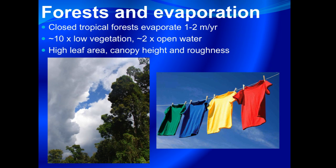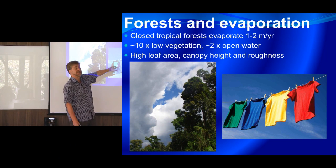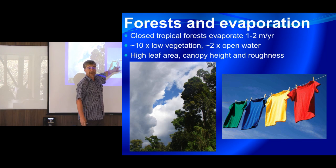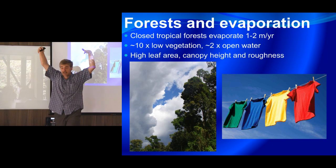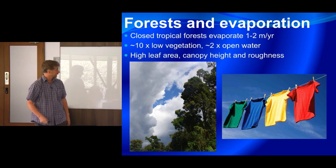Why is that? If you really look at a tree, it's kind of a machine for evaporating water. It has a high leaf area with all these leaves hanging out on the ends of the branches, and tall trunks sticking up to carry them into the air. It's the same idea as why you hang your clothes on a clothesline to dry rather than putting them on the ground — you can call it the clothesline effect. Leaves on a tree evaporate water more effectively than low shrubby vegetation on the ground.